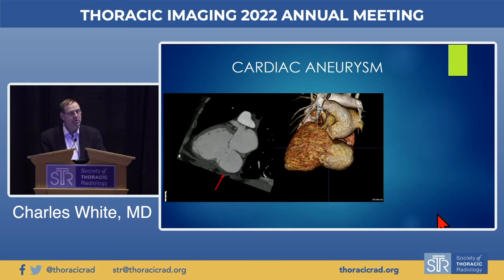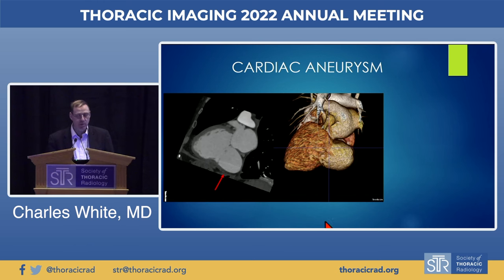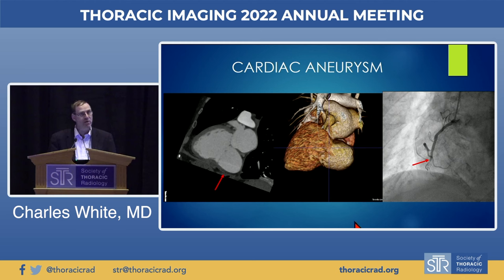Cardiac CT can also show left ventricular aneurysms — outpouchings of the left ventricle — which can be demonstrated in motion and volumetric reconstruction, along with catheterization showing RCA occlusion as the etiology. We can separate left ventricular aneurysm from pseudoaneurysm; the best distinguishing feature is the size of the mouth. A wide mouth suggests a true left ventricular aneurysm.